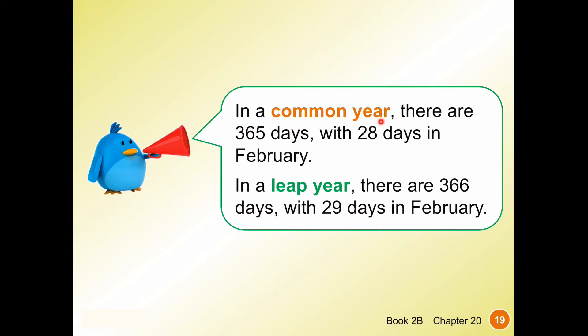In a common year there are 365 days, with 28 days in February. In a leap year — which 2020 is — there are 366 days, with 29 days in February. I'll talk about the rest of Chapter 20 tomorrow.